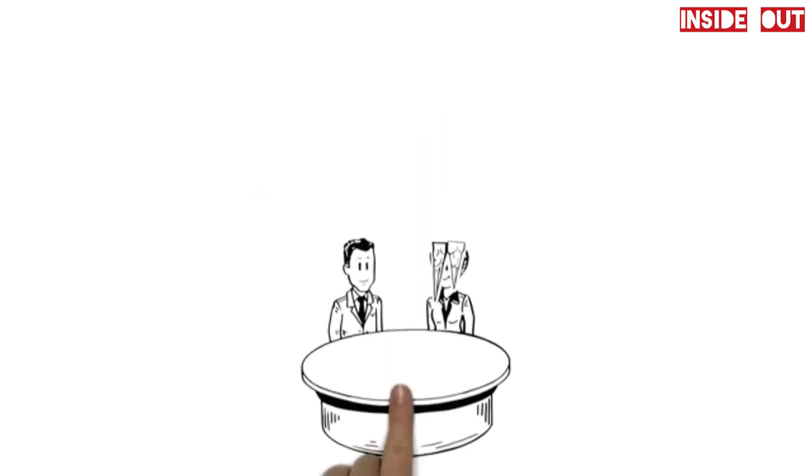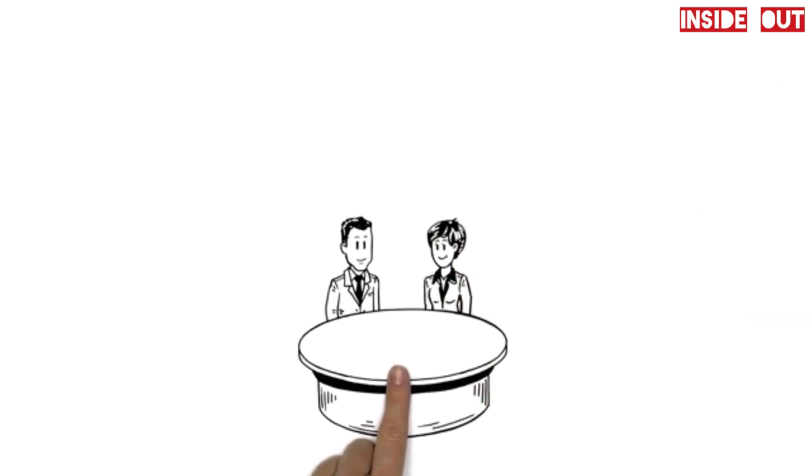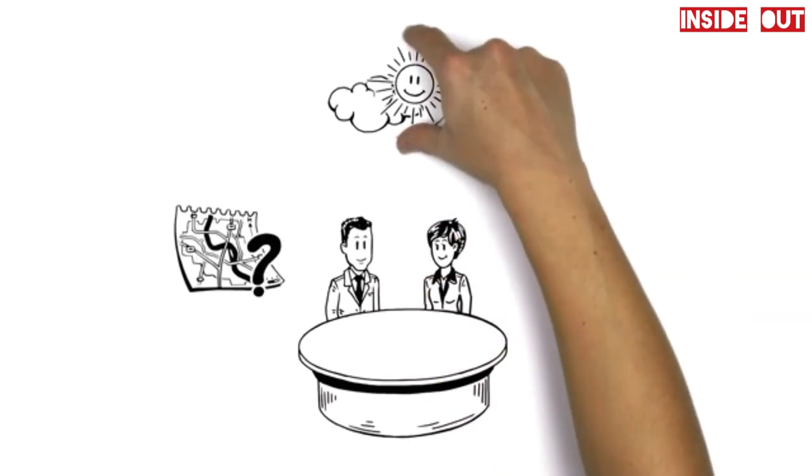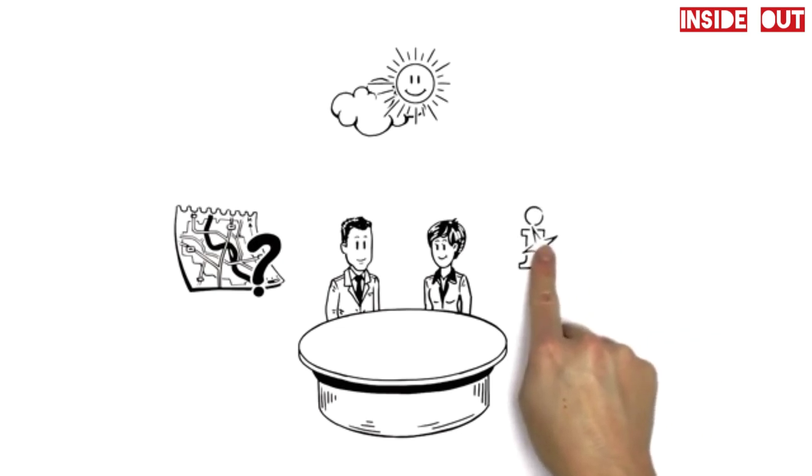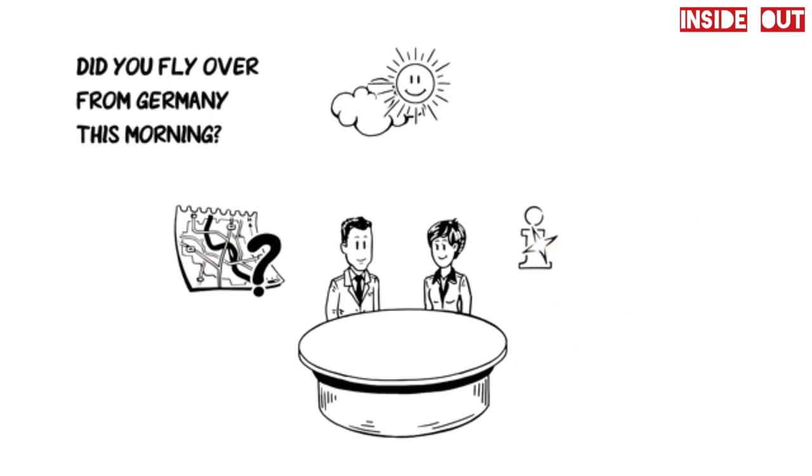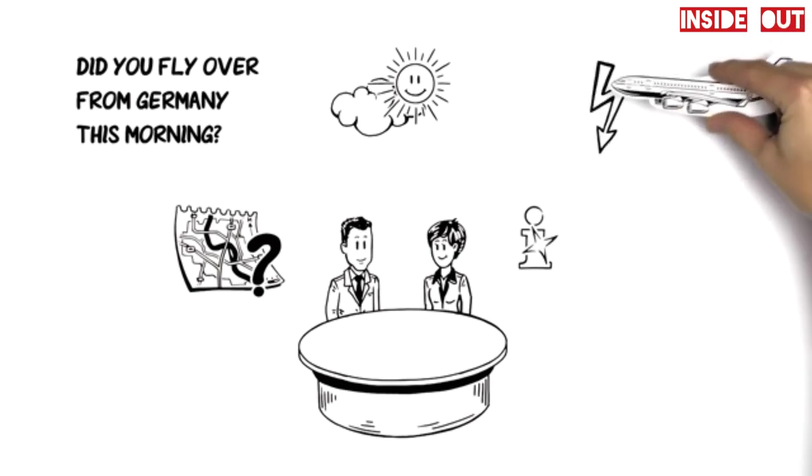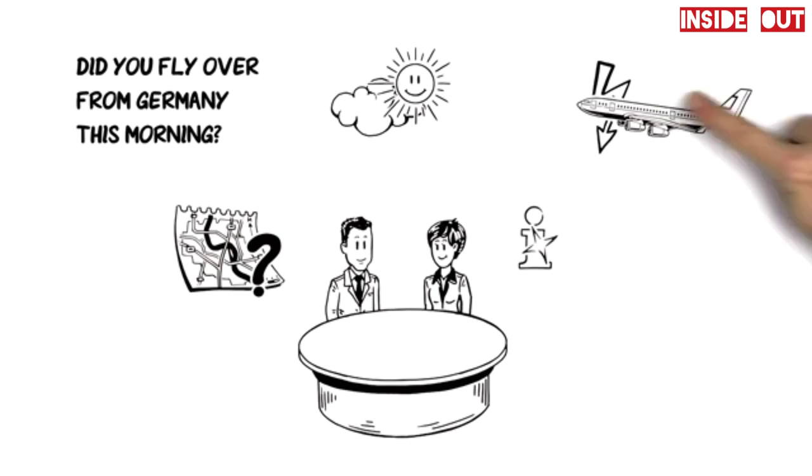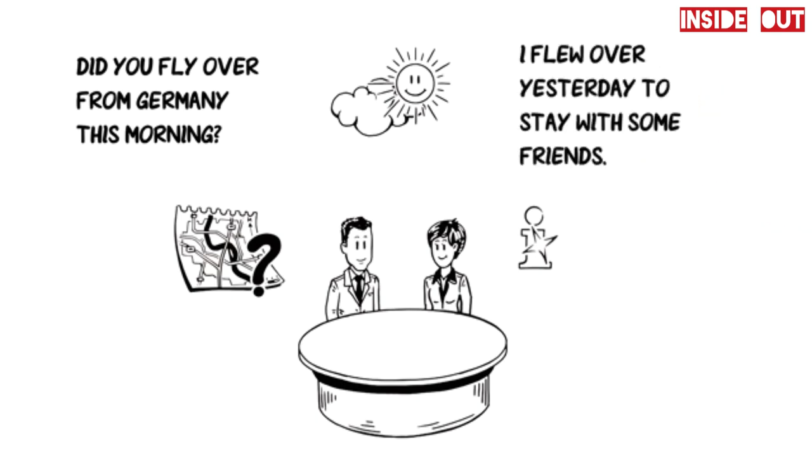At the beginning, the interviewer might try to break the ice by talking about your journey. Keep the small talk brief and positive and give some extra information. So, when he asks you, did you fly over from Germany this morning, don't complain about the terrible flights you had. Rather say, I flew over yesterday to stay with some friends.